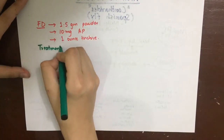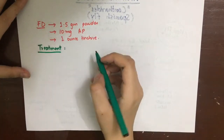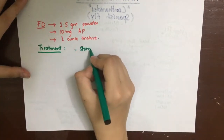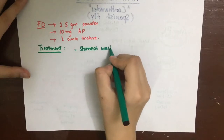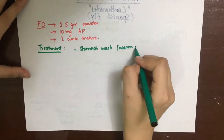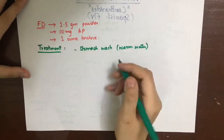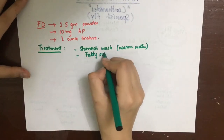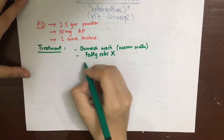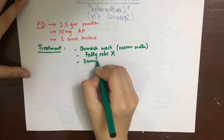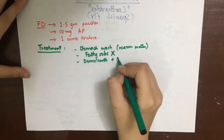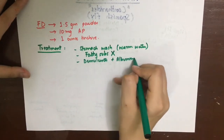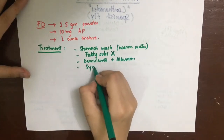The treatment is stomach wash with warm water. Fatty substances are contraindicated. Demulcents and albumin should be given, and the rest of the treatment is symptomatic.